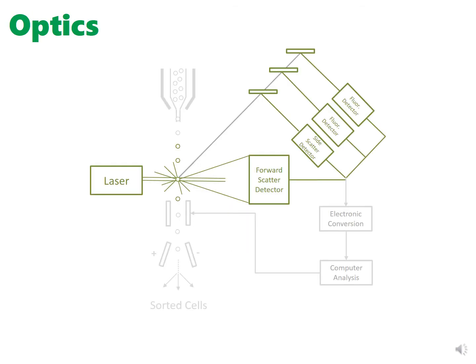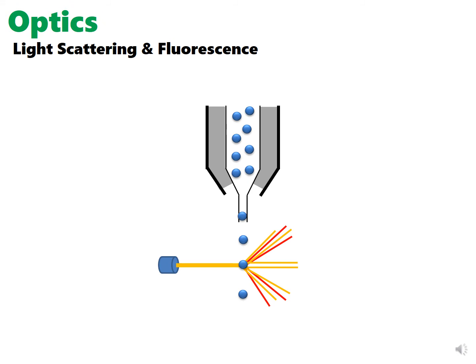The optics involves the light applied to the sample, as well as a combination of mirrors and detectors. When the laser reaches each cell, at what is called the interrogation point, the light is scattered and fluorescence is also emitted in the presence of fluorophores.